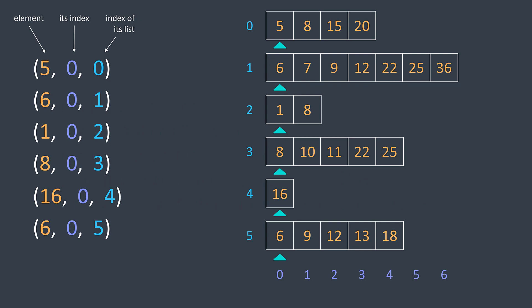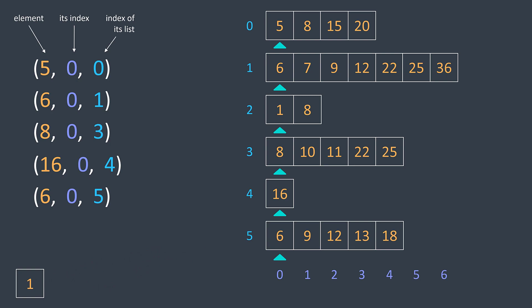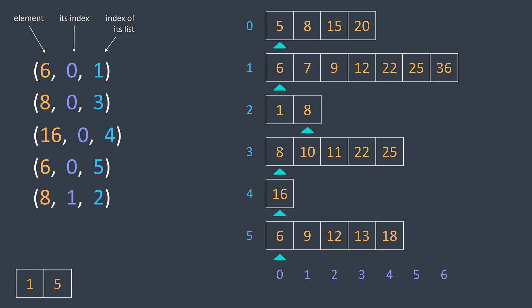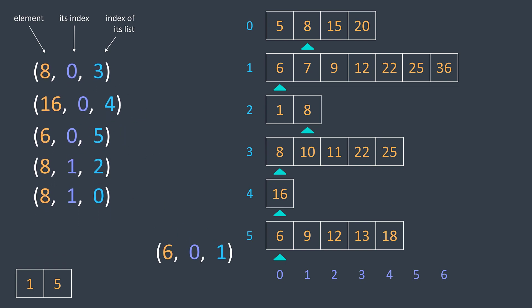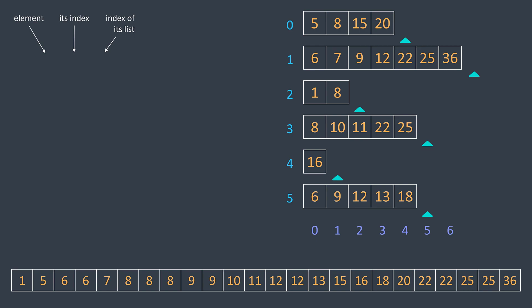We start from the beginning of each list. Our initial elements in the queue are: (5, 0, 0) — the first element of list 0; (6, 0, 1) — the first element of list 1; (1, 0, 2) — the first element of list 2, and so on. We compare tuples by their first element. The smallest is 1, so we add it to output and take the element at index 0 from list 2. The next element from list 2 is at index 1, so we insert (8, 1, 2). Next iteration, the smallest is 5 — we add it to output, its position was 0, so we insert (8, 1, 0). Next, the smallest is 6 — add to output, insert (7, 1, 1). We continue until the queue becomes empty. The queue eventually empties because when we increment the index and reach the end of a list, there's nothing to insert.